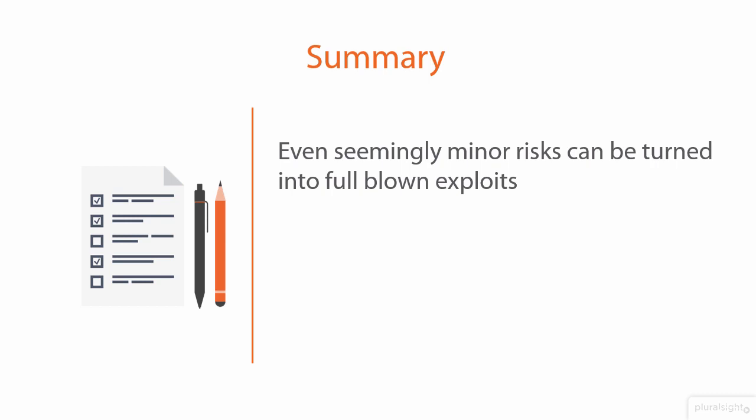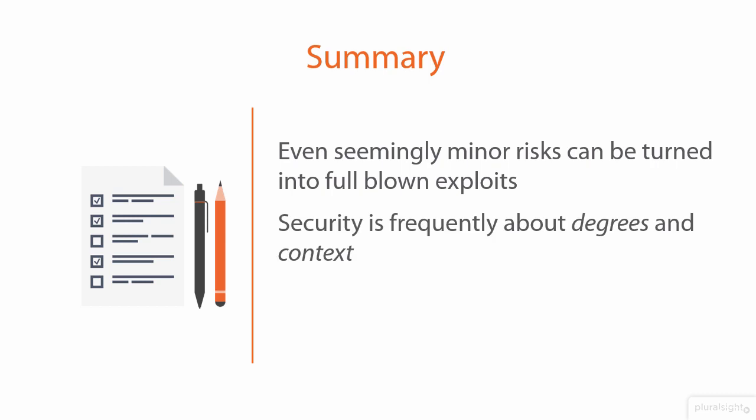Another thing we saw in this module — and indeed something that's come up many times across the entire course — is how security is frequently about degrees and context. For example, we looked at insecure cryptographic storage: Salted SHA-1. Many people would consider this secure, but clearly we cracked it really, really quickly. Over time the view of the security of Salted SHA-1 has changed quite dramatically, particularly as GPUs get faster and cracking gets more efficient.